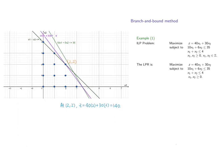If we move the level set of the objective function towards increasing value, we observe that the last point the line touches is (2, 2). So it is the optimal point, and it yields the value z equals 140 for the objective function.